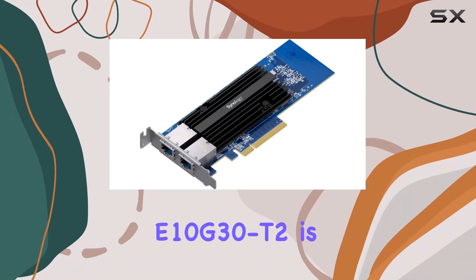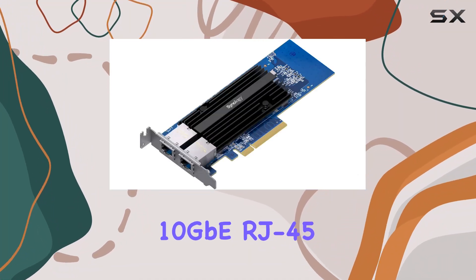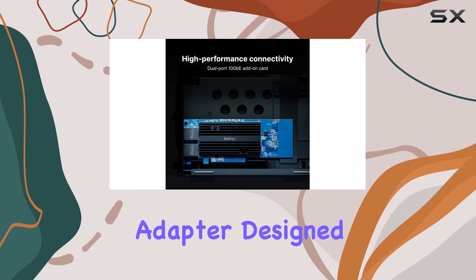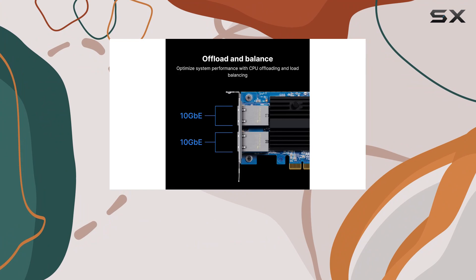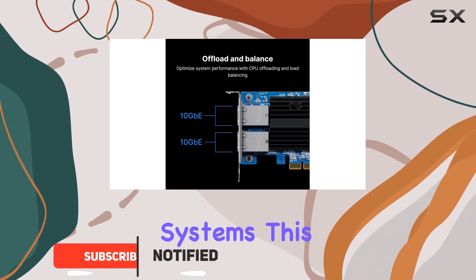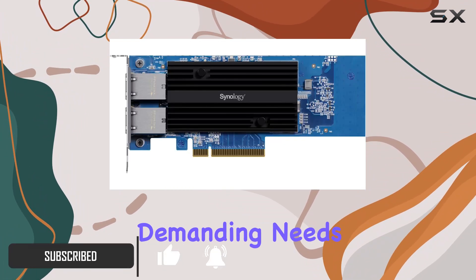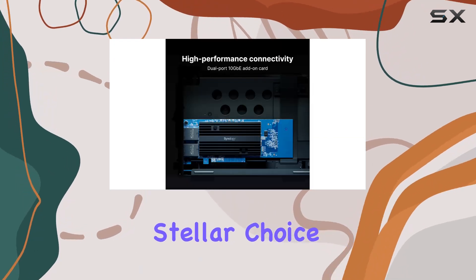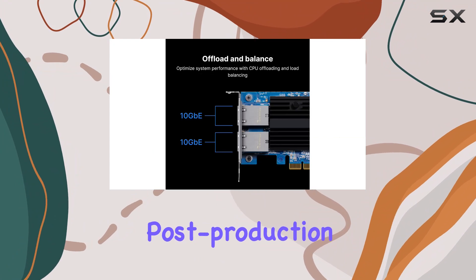The Synology E10G30T2 is a dual-port 10GB RJ45 PCIe network adapter designed to supercharge your network performance, especially if you are working with Synology systems. This powerful adapter is purpose-built to handle the demanding needs of modern businesses, making it a stellar choice for those dealing with bandwidth-intensive tasks like backup.